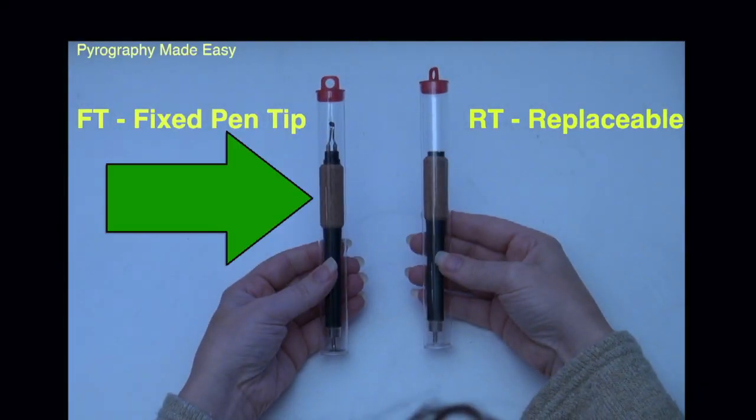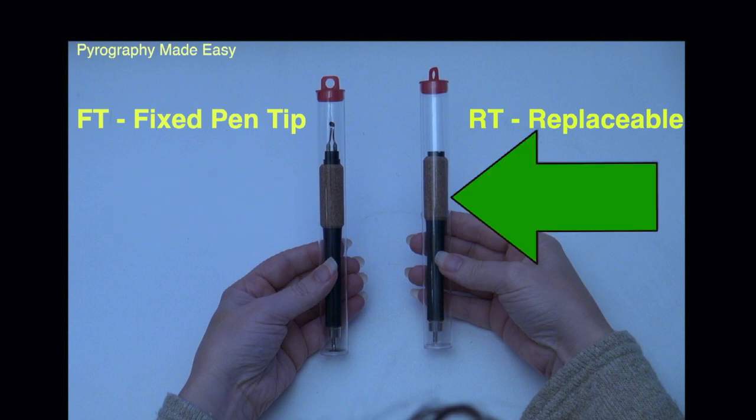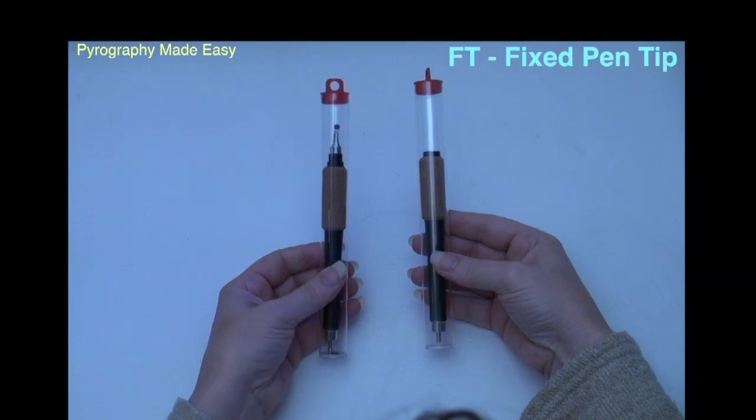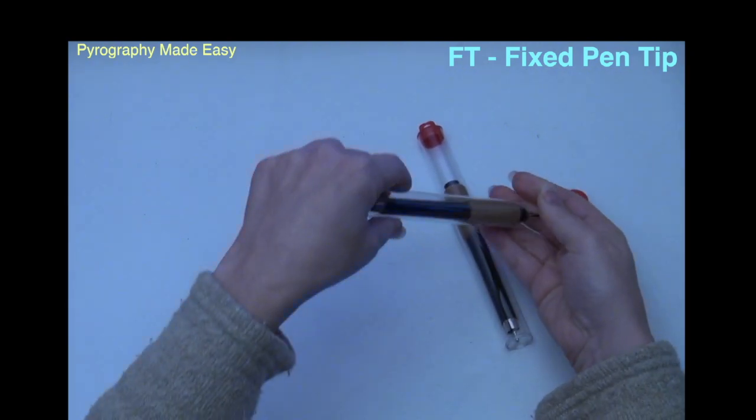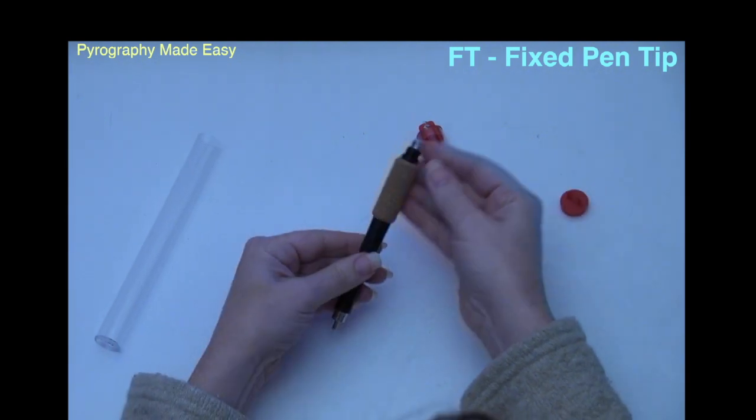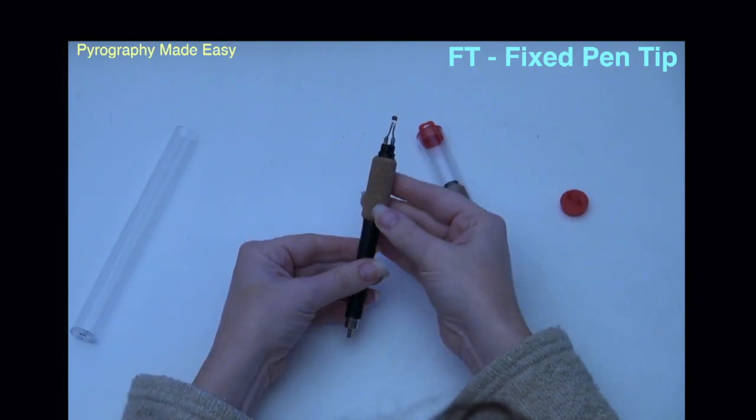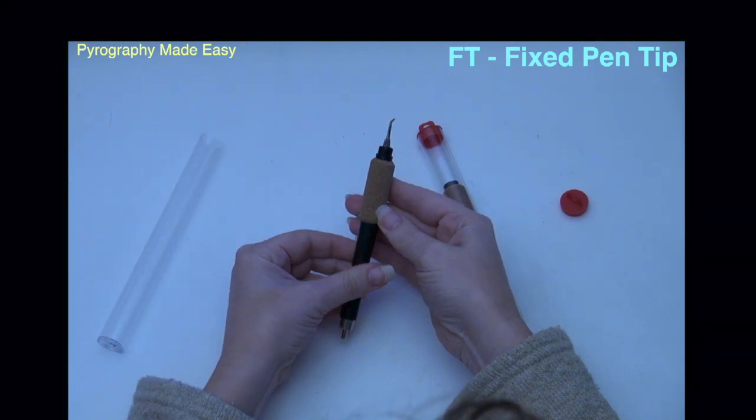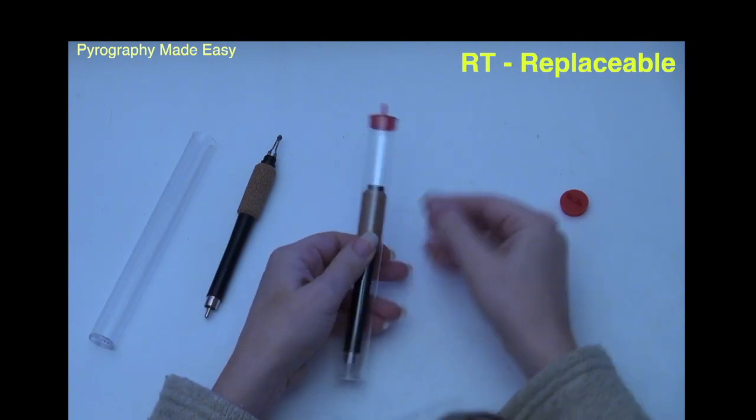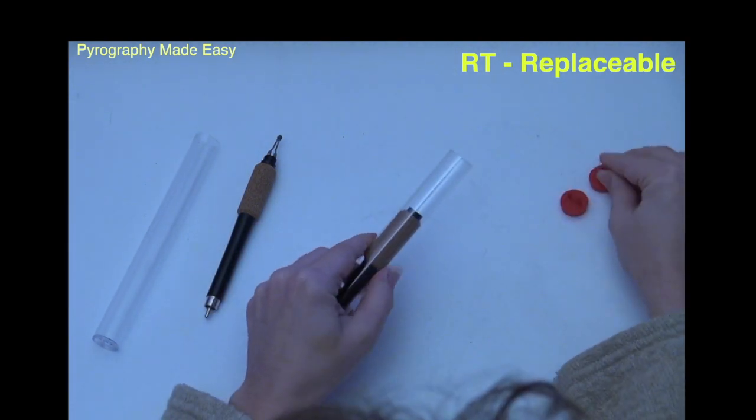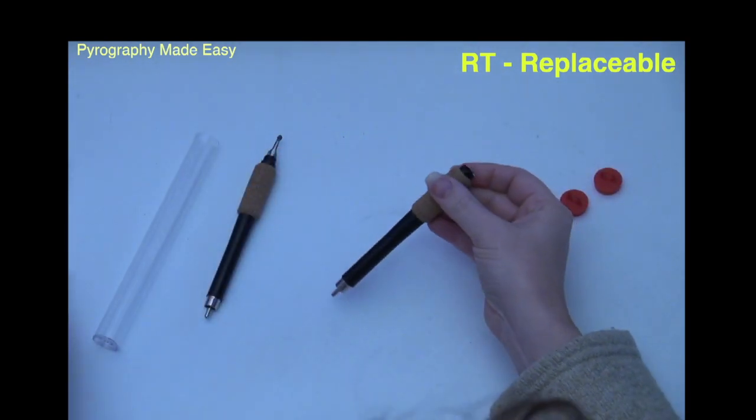The handset on the left is a fixed tip model. The one on the right a replaceable tip model. The fixed tip handset has a pen tip permanently attached to it. This provides a more secure connection and ensures a steady heat output. The downside is that they cost more and they are a bit bulkier to store. The replaceable handset does not come with pen tips. Those have to be purchased separately.